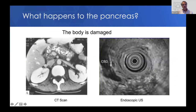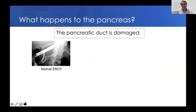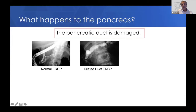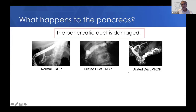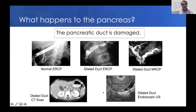The pancreatic duct is also damaged in chronic pancreatitis. This is a normal pancreatic duct on a normal ERCP. The duct can be quite dilated — we see this in kids on MRCP, where one can also see lots of side branches coming off the duct, which is abnormal. There is also a dilated duct visible by CT and by endoscopic ultrasound. There are many ways to look at this, and a dilated pancreatic duct is a fairly common finding in kids who develop chronic pancreatitis.